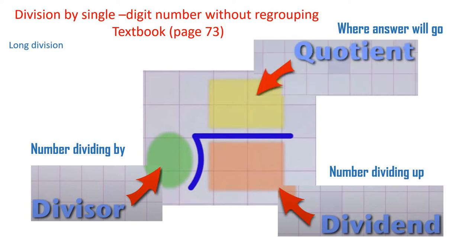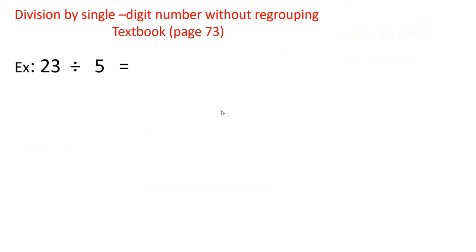So you write the big number under the horizontal line, the divisor on the outside, and you write the answer on top. We will see with the exercises what that means.